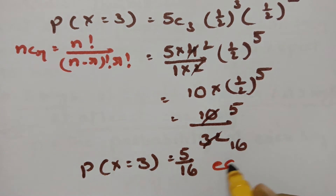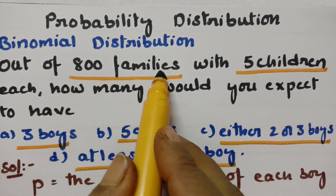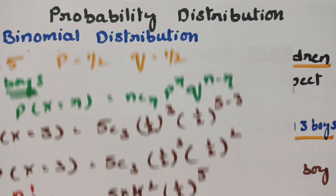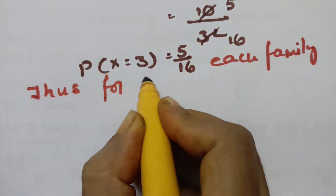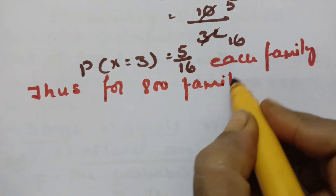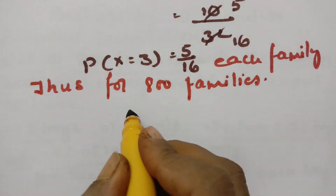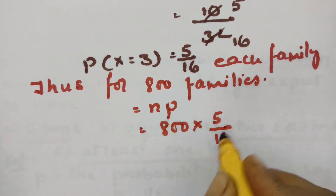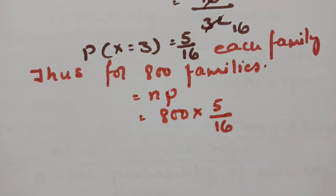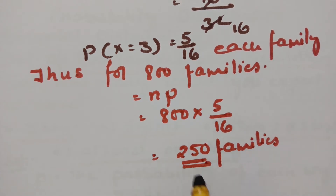This probability is per family. Out of 800 families, the expected number having 3 boys is N × P = 800 × (5/16). Cancelling, this equals 250. So 250 families out of 800 will be expected to have 3 boys.